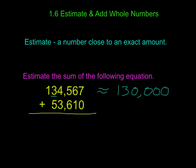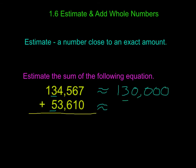Now we're going to look at our 53,610. We're going to put our about sign in here. Once again, we're looking at our 10,000ths place, so we're going to underline there and look right next door — if it's 4 or less, we ignore. 3 is less than 4, so we're going to ignore, and that is going to become 50,000. We bring over our 5, and then everything to the right of the 5 turns to 0, giving us 50,000.